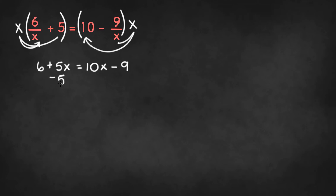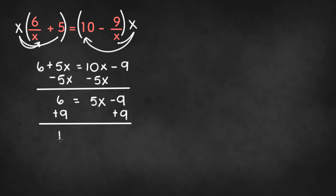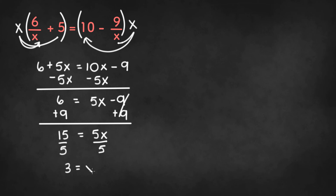Now we can subtract 5x from both sides of the equation to get 6 on the left-hand side and 10x minus 5x, which is 5x minus 9 on the right-hand side. Now we can add 9 to both sides to get 15 equals 5x. Last but not least, we divide by 5 to get x equals 3. And that is the final answer.